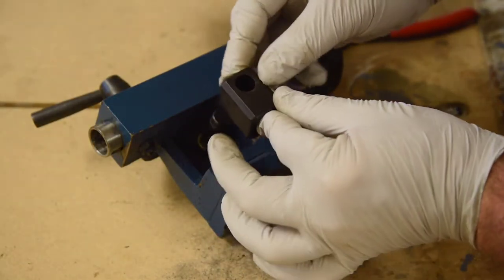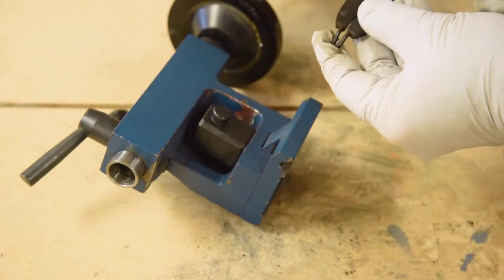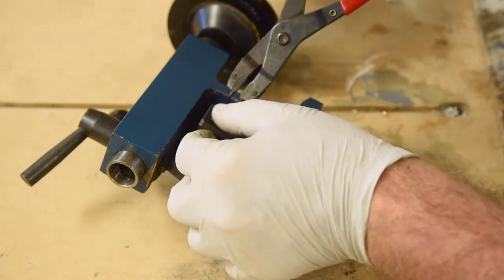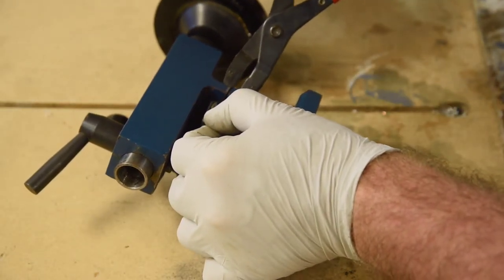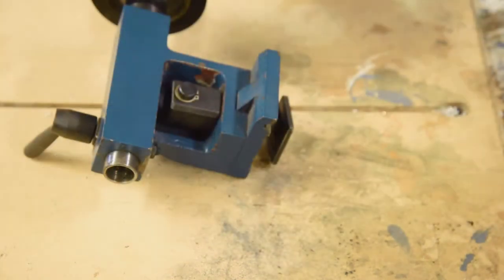Next the cam sleeve and socket go on the shaft. Then the outside retaining ring. The clamp foot gets screwed on and we are ready to try it out.